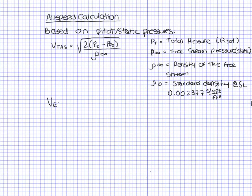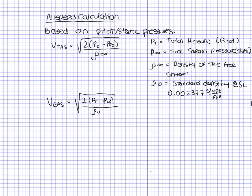The next one is equivalent airspeed, and that's going to be the square root of two times total pressure minus free stream static pressure, divided by the standard density.